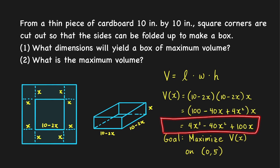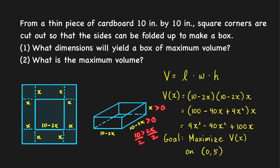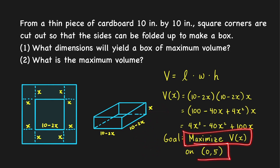We need to consider the domain for this function. Since the length of the box must be positive, x must be greater than 0. Also, 10 minus 2x must be greater than 0, which gives 10 greater than 2x, so x less than 5. Therefore we want to maximize the volume function on the open interval (0, 5), excluding the endpoints 0 and 5.